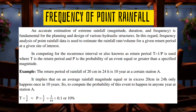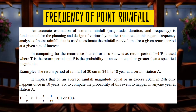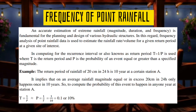For example, the return period of rainfall of 20 cm in 24 hours is 10 years at a certain station A. This means the average rainfall magnitude equal to or greater than 20 cm in 24 hours occurs only once in 10 years. So in 100 years, 10 such events can be expected. The probability of this event happening in any one year at station A is what we compute.